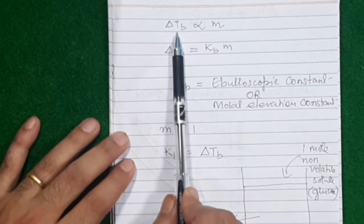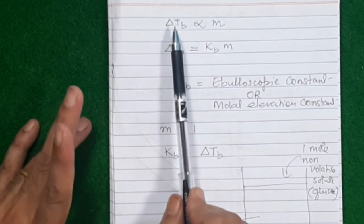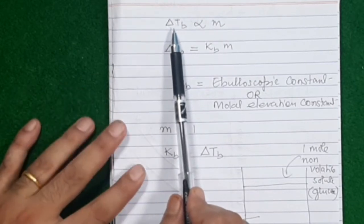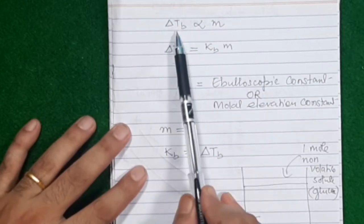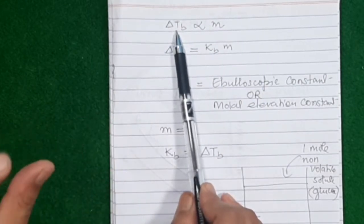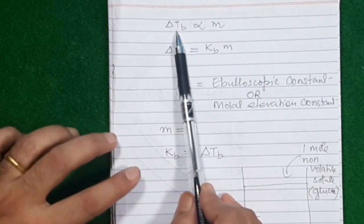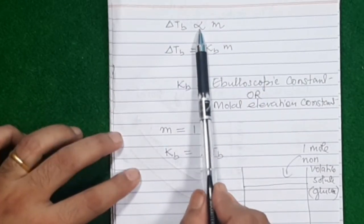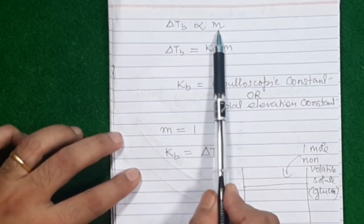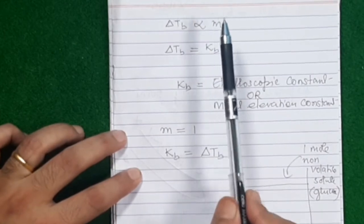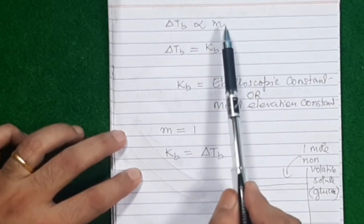For example, if pure water boils at 100 and its solution starts boiling at 102, then delta Tb is 2 degrees — that rise in boiling point from 100 to 102. According to Raoult's law, this elevation of boiling point is directly proportional to the molality of the solution. This is logical: if you add a lot of impurities, molality will be high and the boiling point will rise quite a lot.